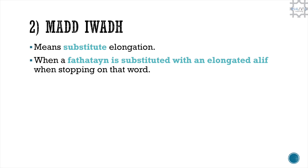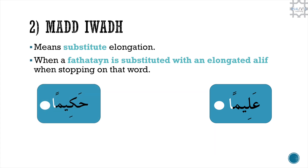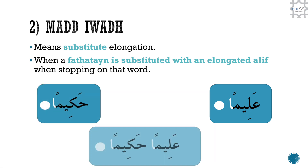Number 2, mad iwad, means substitute elongation. It occurs when a fatah tain is substituted with an elongated alif when stopping on that word. For example: Alima hakeemah. When put together, it would be: Alima hakeemah.